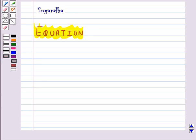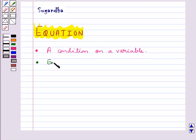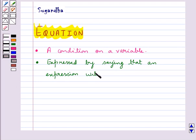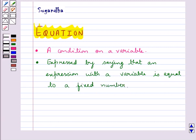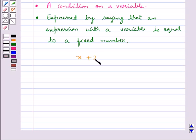First let's understand what an equation is. An equation is basically a condition on a variable. It is expressed by saying that an expression with a variable is equal to a fixed number. Like if we have an expression of this kind which is equal to a fixed number, so this is basically an equation.